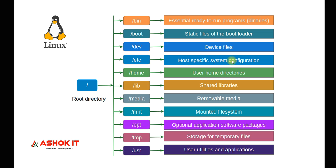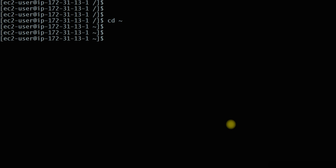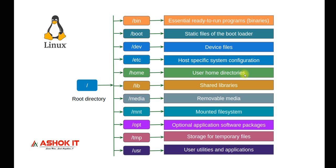The /etc directory contains system configuration files. The /home directory is very important — Linux is a multi-user based operating system, so multiple user accounts can be created. For every user, one home directory will be created inside /home. Currently I'm connected as an EC2 user — my present working directory is /home/ec2-user. If you create another user account, one home directory will be created inside /home for that user. The /lib directory contains shared libraries.